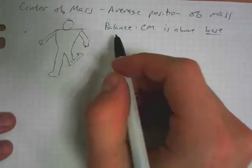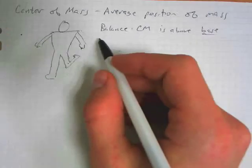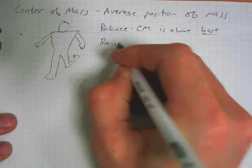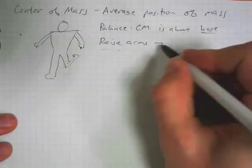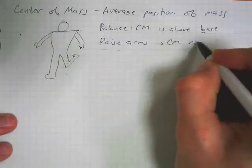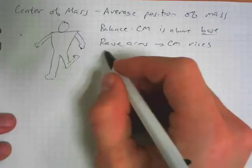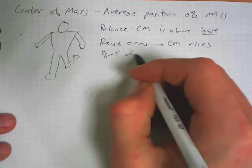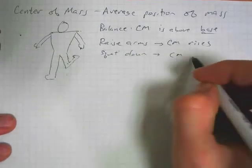Your center of mass moves around depending on the position of your body. Like if you raise your arms, now you have more mass up higher, your center of mass goes up. If you squat down, then your center of mass goes down, it lowers.